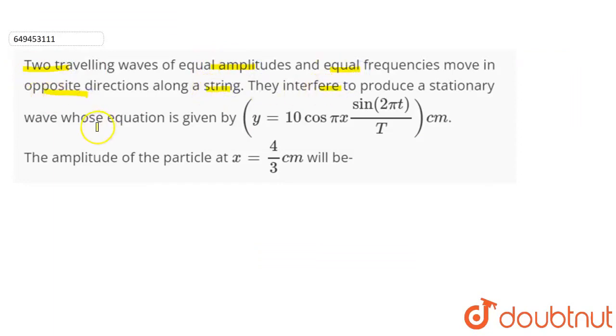They interfere to produce a stationary wave whose equation is given by y equals 10 cos πx sin(2πt/T) centimeter. The amplitude of the particle at x equals 4/3 centimeter will be.